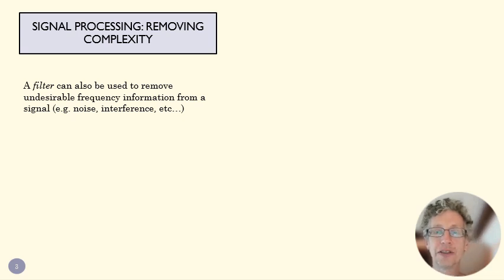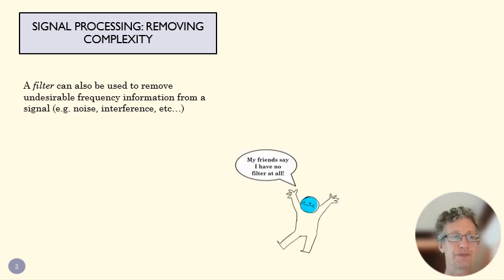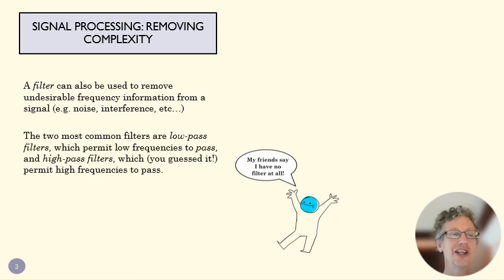The second data processing tool that we use to remove unwanted information is what's called a filter. And like time averaging, it takes out parts of the dynamic signal that aren't going to be useful to us. And here's a little blue guy commenting on this filter doesn't have one.